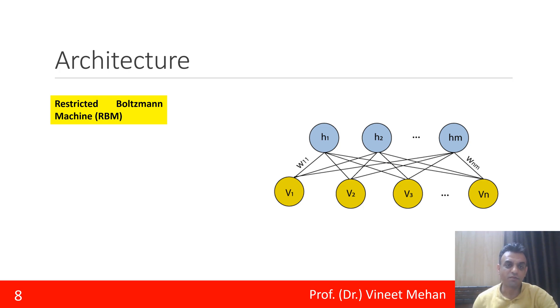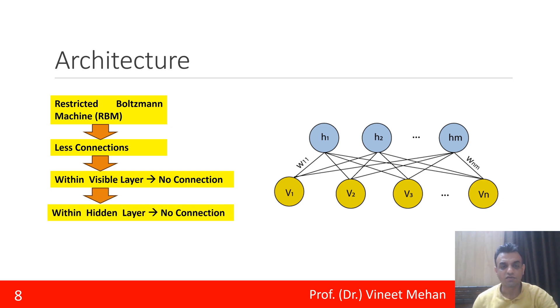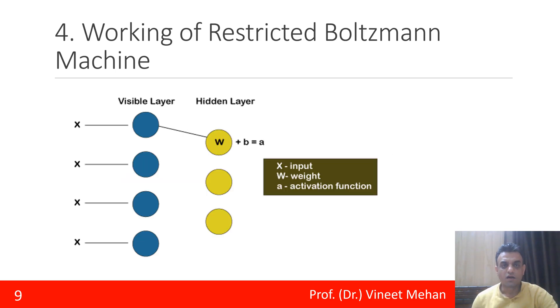How can we reduce the complexity? We can reduce the complexity by using RBM—Restricted Boltzmann Machine. In this there are less connections. You can see the visible layer: within the visible layer there is no connection. Similarly, within the hidden layer also there is no connection. So we have reduced the connections and the computational complexity.